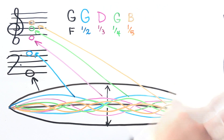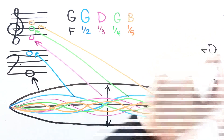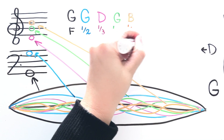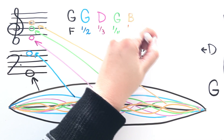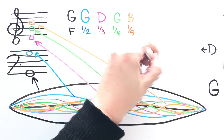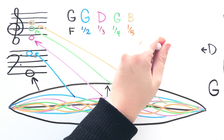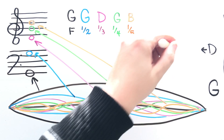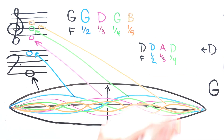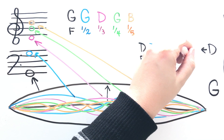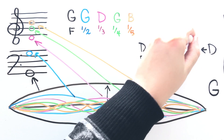This is the case for any string on your hammered dulcimer. So if we were to change this to a D, our series would look like this: our fundamental note would be a D, the next note would be an octave above D, the next note would be a fifth above that which is an A, the next note would be another octave, and then the next note would be a third above that. So what's a third above a D? F sharp.